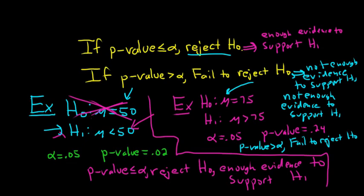So if you were doing a written interpretation, let's go back to the first example. You would reject H₀, and so you would say there is sufficient evidence to claim that the population mean is less than 50. Because we rejected the null hypothesis, there is sufficient evidence to support the alternative hypothesis — sufficient evidence to support the claim that the population mean is less than 50.